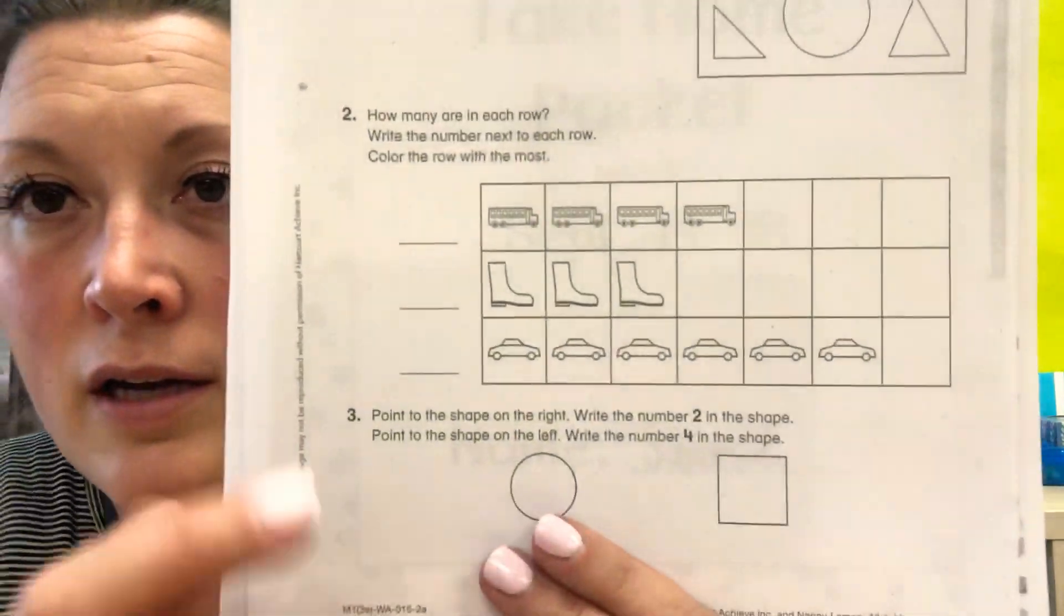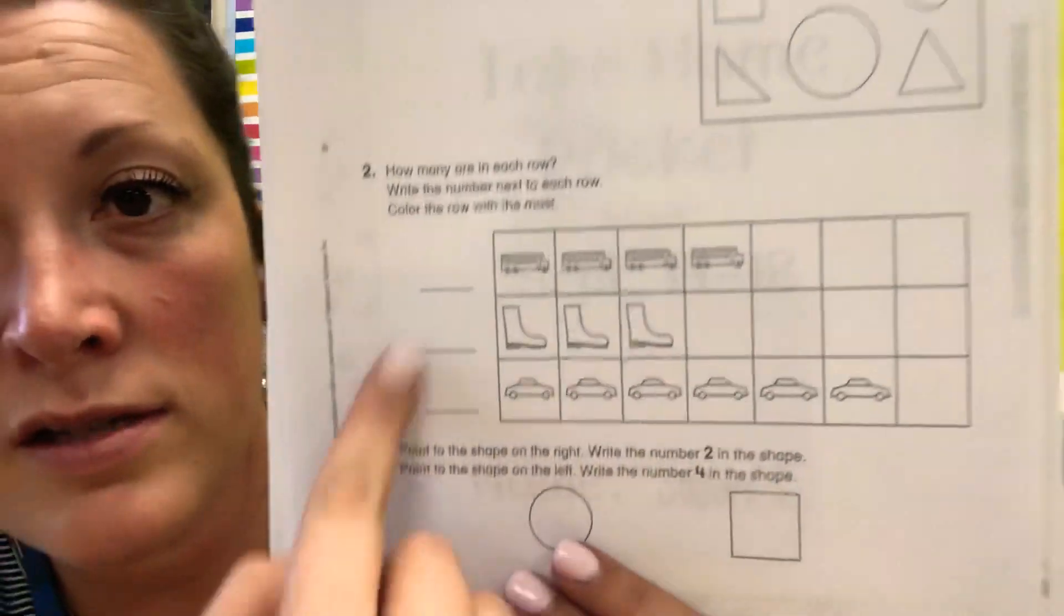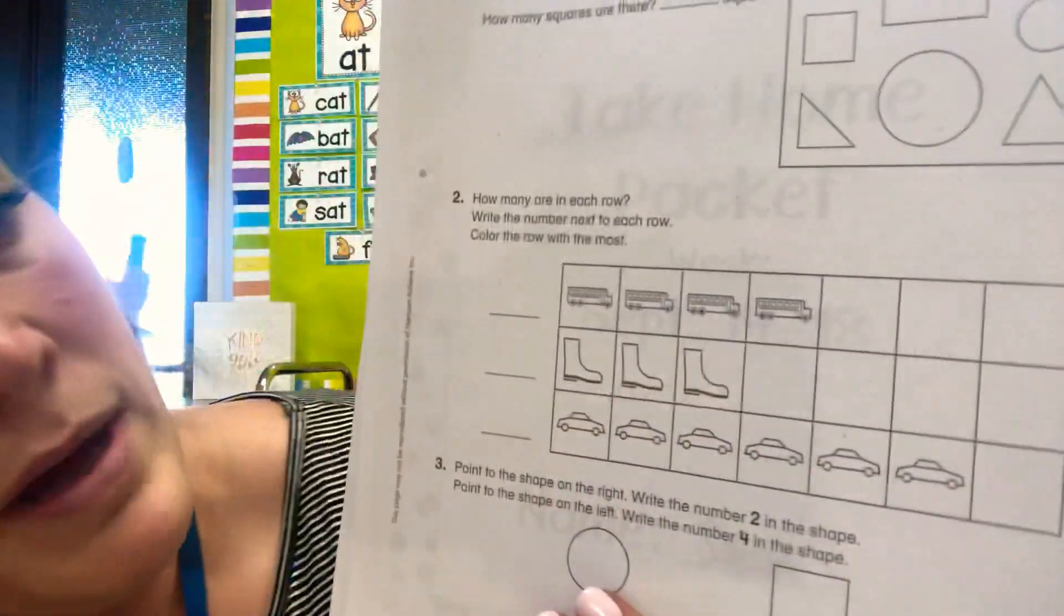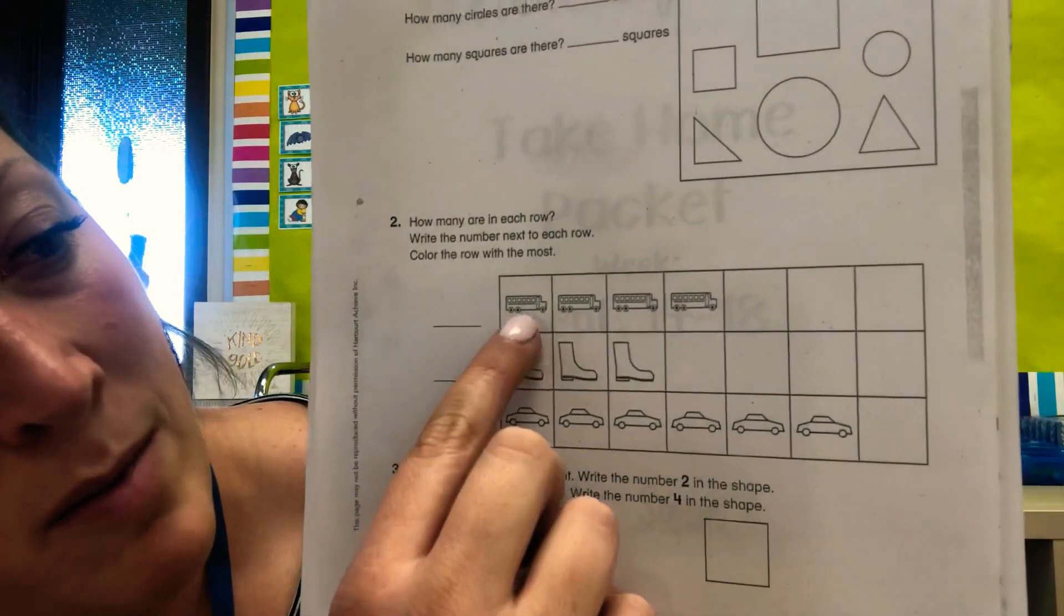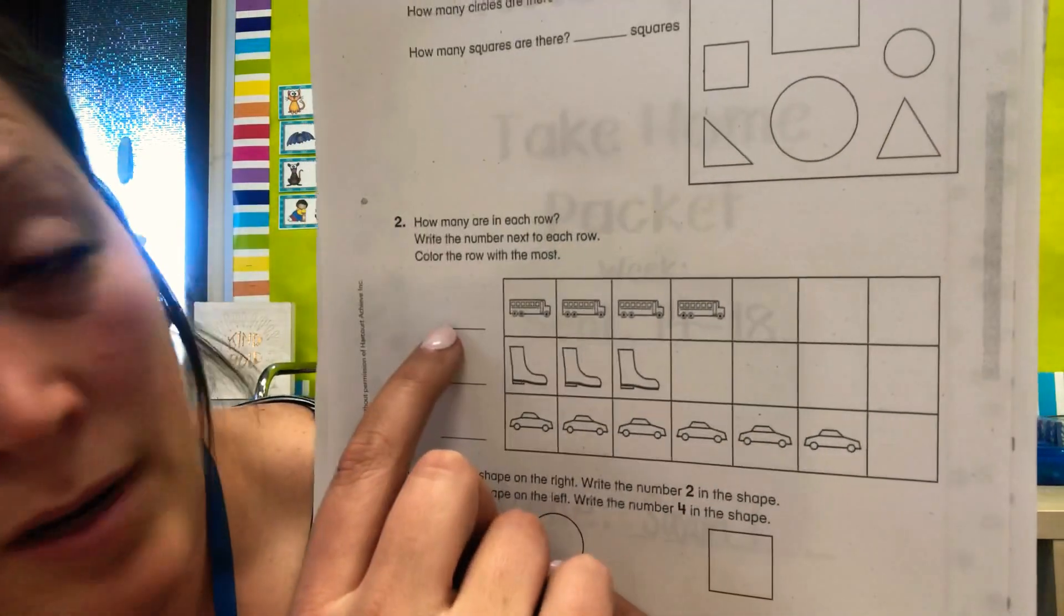That was number one. Number two. Here's the graph right here. How many are in each row? However many buses there are you need to write the number right outside.